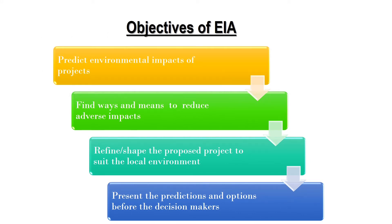Let's look at the different objectives of EIA. The first objective is to predict environmental impacts of projects. The second is to find ways and means to reduce adverse impacts. The third is to refine or shape the proposed project to suit the local environment. The fourth is to present the predictions and options before the decision-makers.